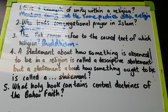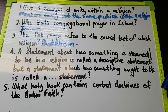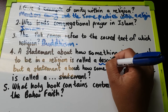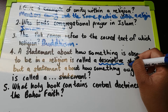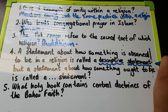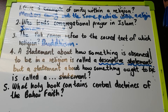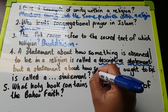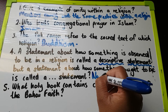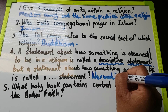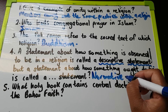Question number four: A statement about how something is observed to be in a religion is called a descriptive statement. Let me just underline that. But a statement about how something ought to be is called a normative statement.